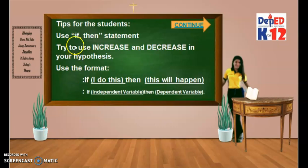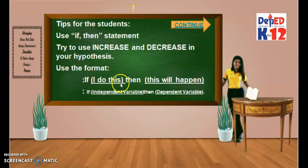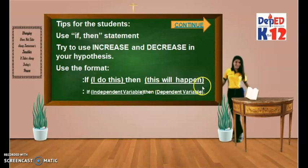Here are some tips: use the if-then statement in formulating your hypothesis. Try to use 'increase' and 'decrease' in your hypothesis. Use this format: if I do this, then this will happen. The phrase 'I do this' refers to the independent variable, and 'this will happen' refers to the dependent variable. So the format is: if [independent variable], then [dependent variable]. Use this so you are not confused.